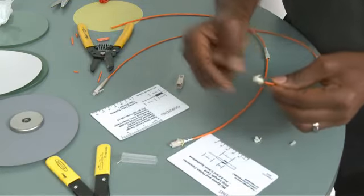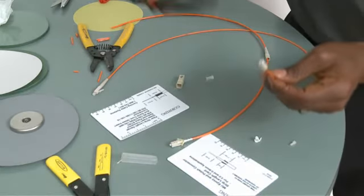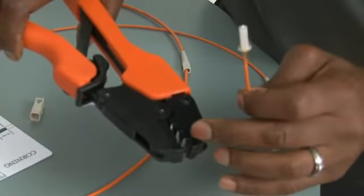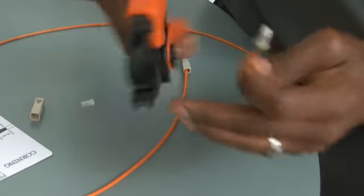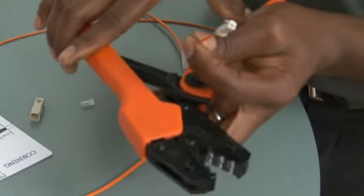For the LC, use the orange tool. Notice the holes A, B, and C. It's the same thing on the blue crimping tool.